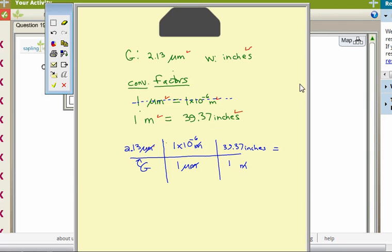Now let's look at figuring out the answer. My final unit is going to be inches. And what I'm going to do is multiply all three values in my numerator: 2.13, 1 times 10 to the minus 6, and then 39.37. And I'm going to use my calculator to do that. And 2.13 times 1 times 10 to the minus 6 times 39.37. And I get 8.39.